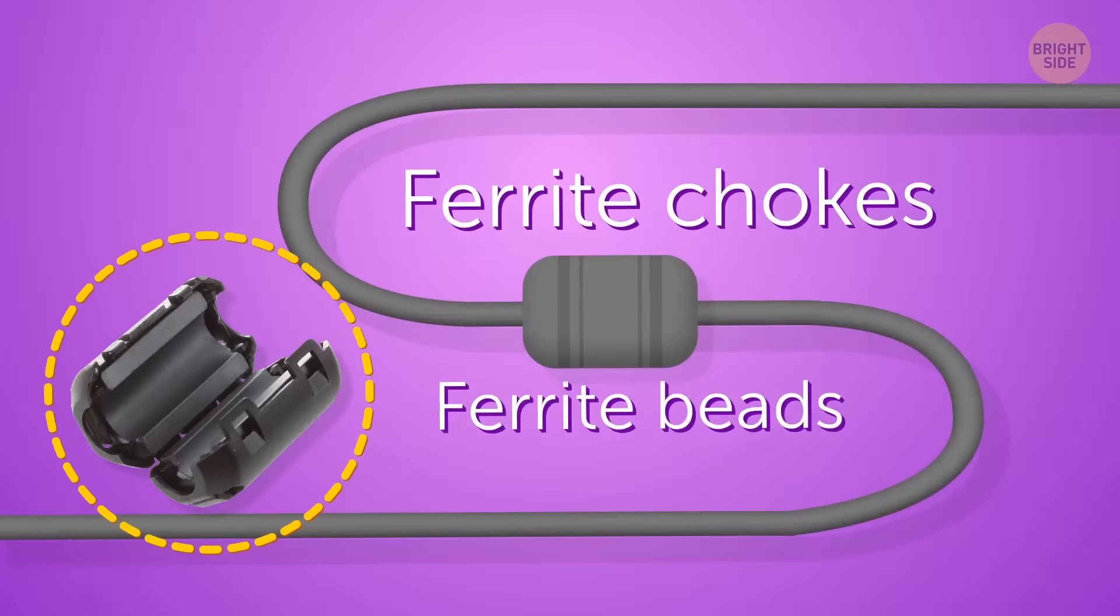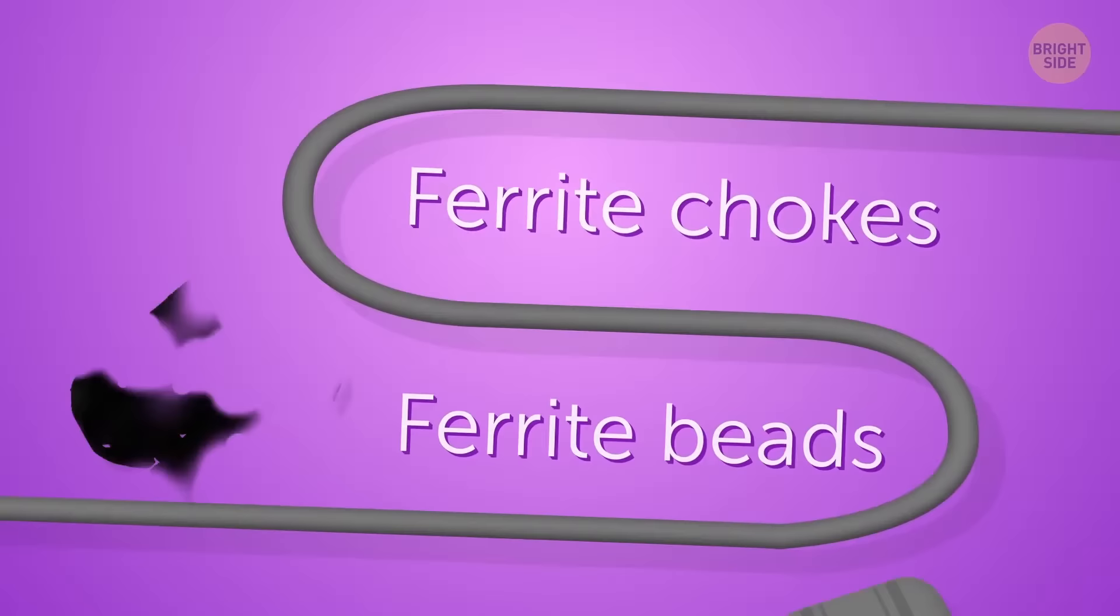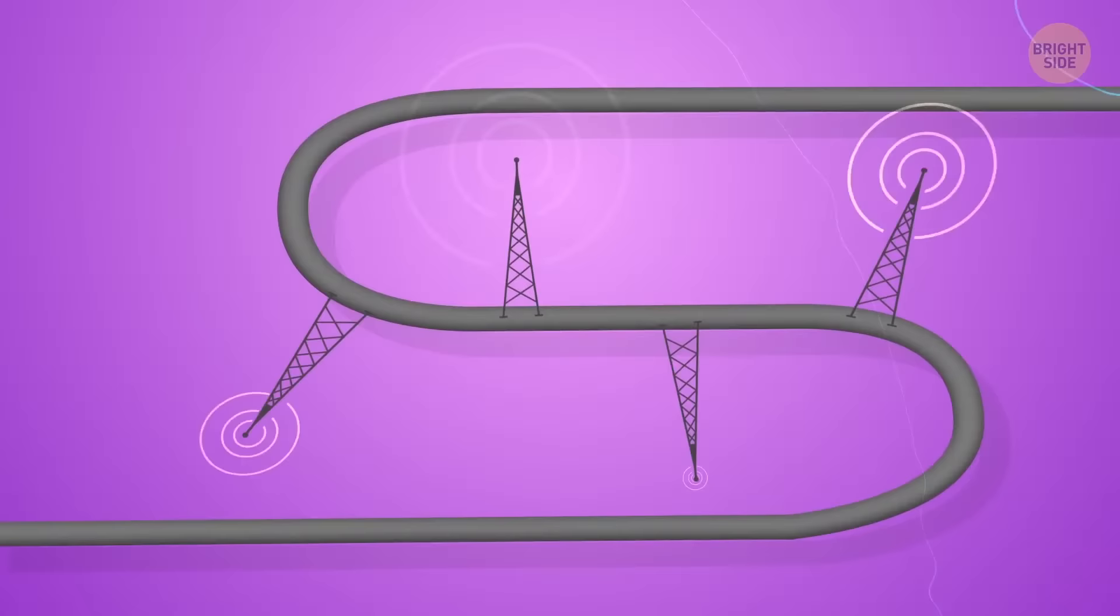You might have noticed that some cables have clunky cylinders on them. These cylinders are called ferrite chokes or ferrite beads. And they have an important function. Without them, cables turn into antennas that can pick up and broadcast electrical interference. The cylinders, in turn, choke this interference.